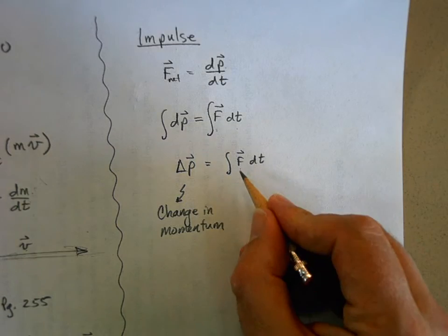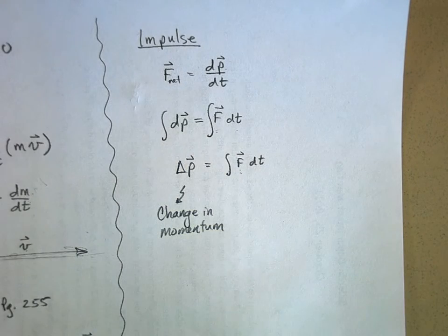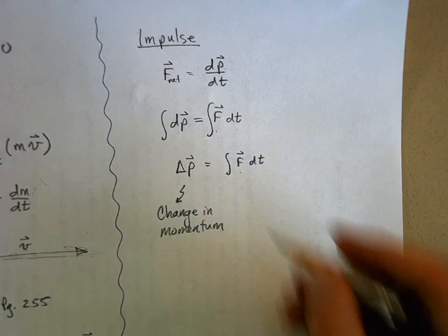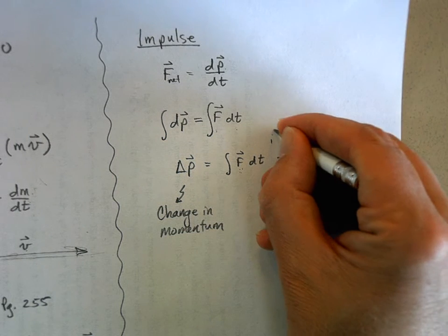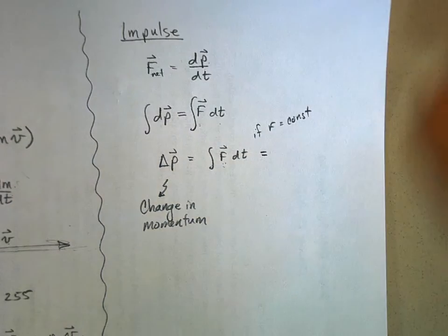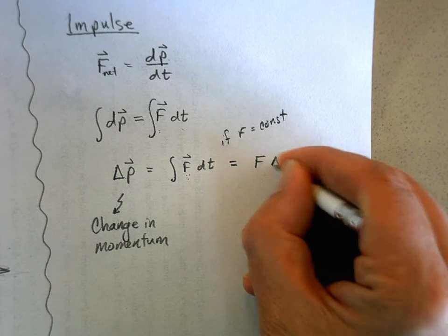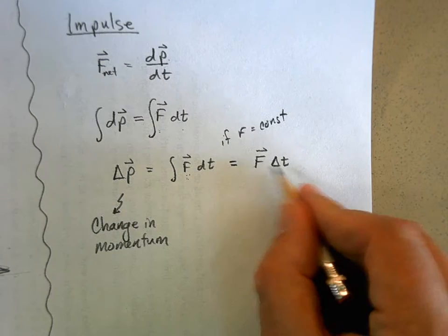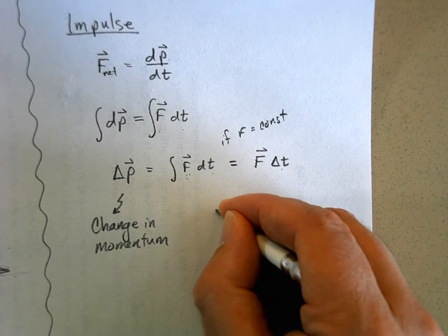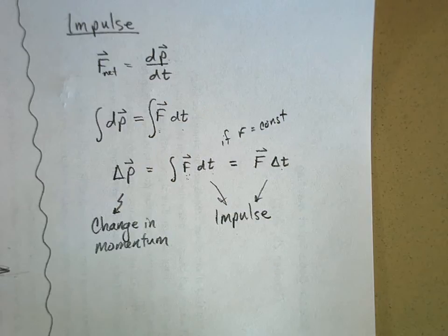But what is this? This is force times time. This is my net force times how much time I apply that net force. If your net force is constant, this is just force times time. If F equals a constant, then you could just say this is force times time. If force is a function of time then you'd have to integrate it, but this is called impulse. Impulse is a product of force times time.